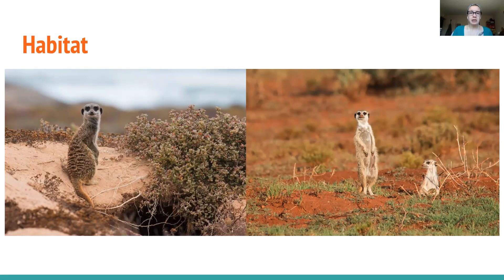They actually use some of this area to scope for predators. If there's not a lot of rainfall and not a lot of vegetation or food, there's not a lot of competition, so meerkats can kind of dominate that zone. They also use these open areas to keep an eye out for predators — if there were trees and things around, that's a good place for predators to hide.